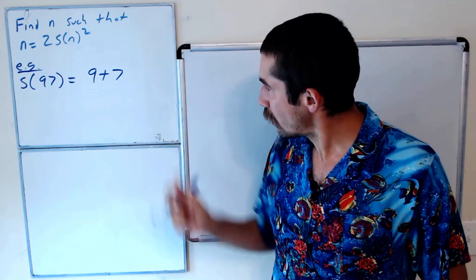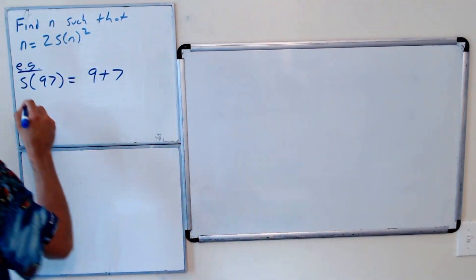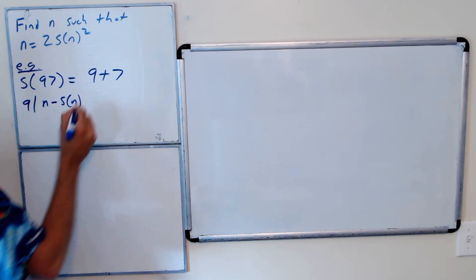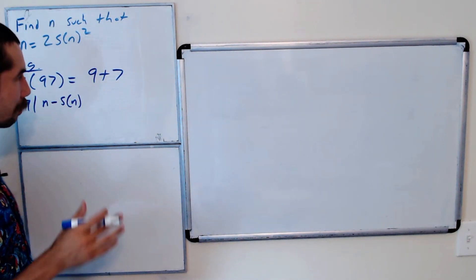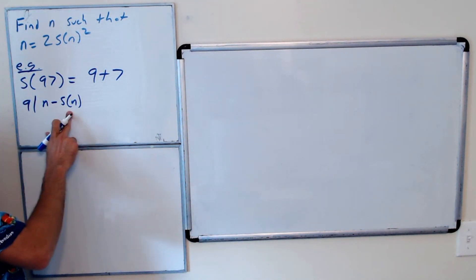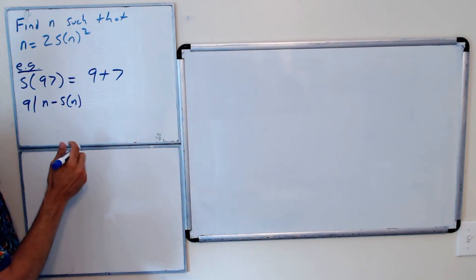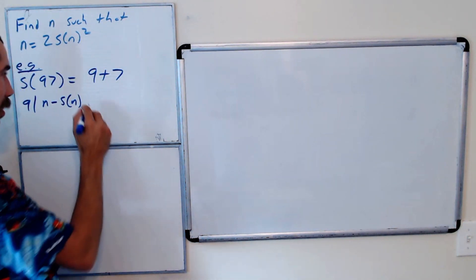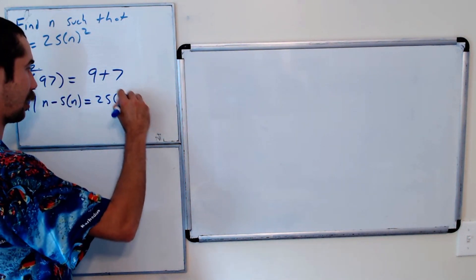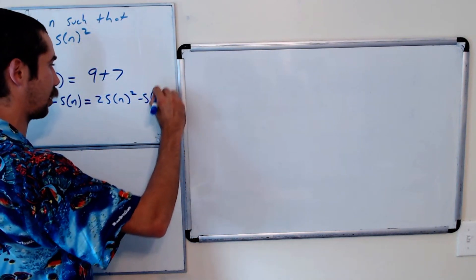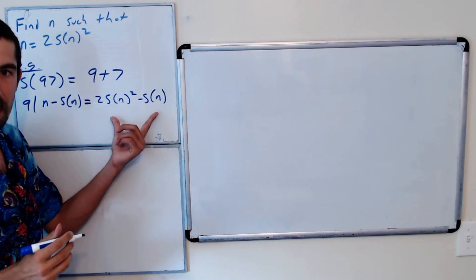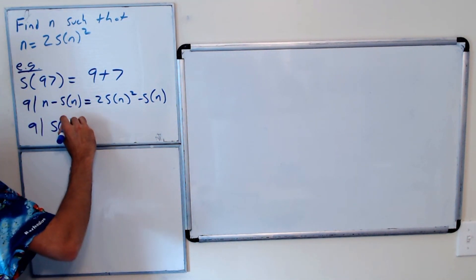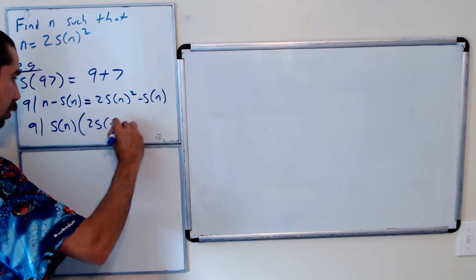The first thing we should note is that 9 divides any number minus the sum of its digits. This isn't hard to prove, but maybe you should prove it on your own. In this particular case, n is equal to 2 times the sum of its digits squared, so 9 divides 2S(n)² - S(n). This has a factor of S(n) in it, so 9 divides S(n) times 2S(n) - 1.